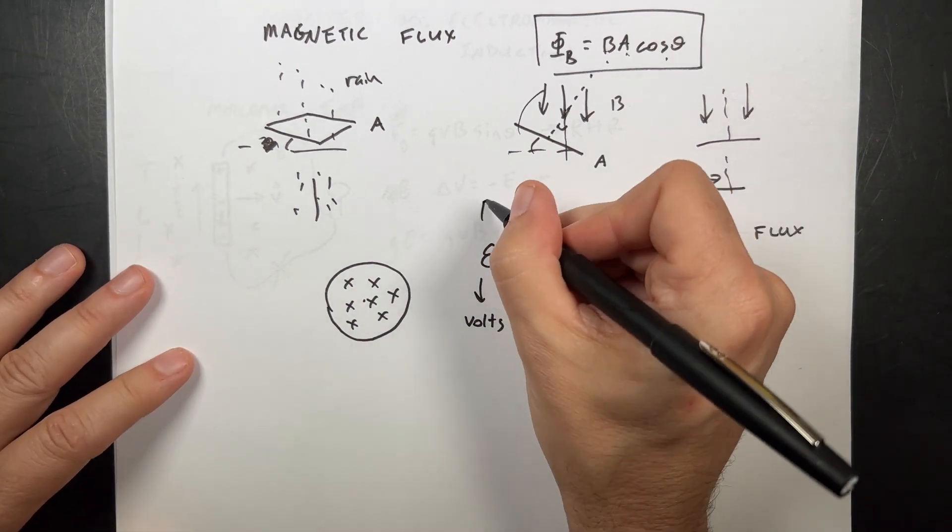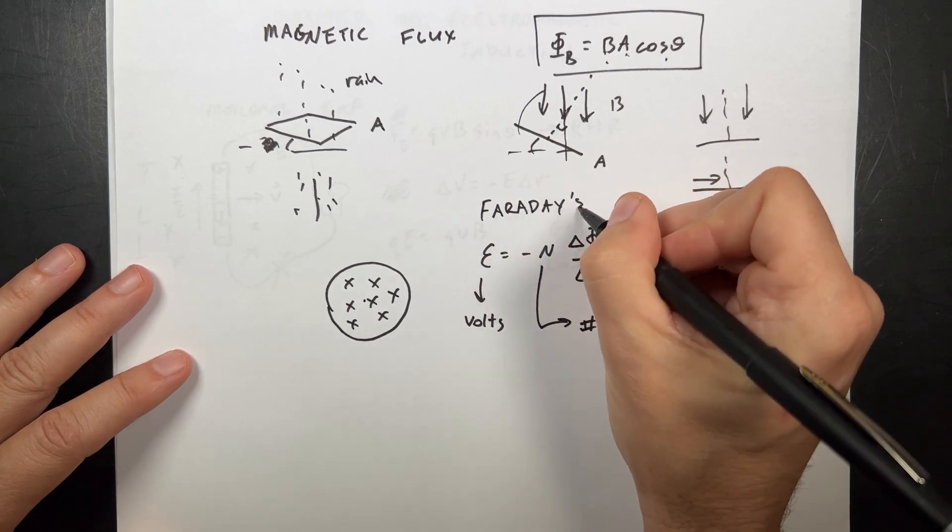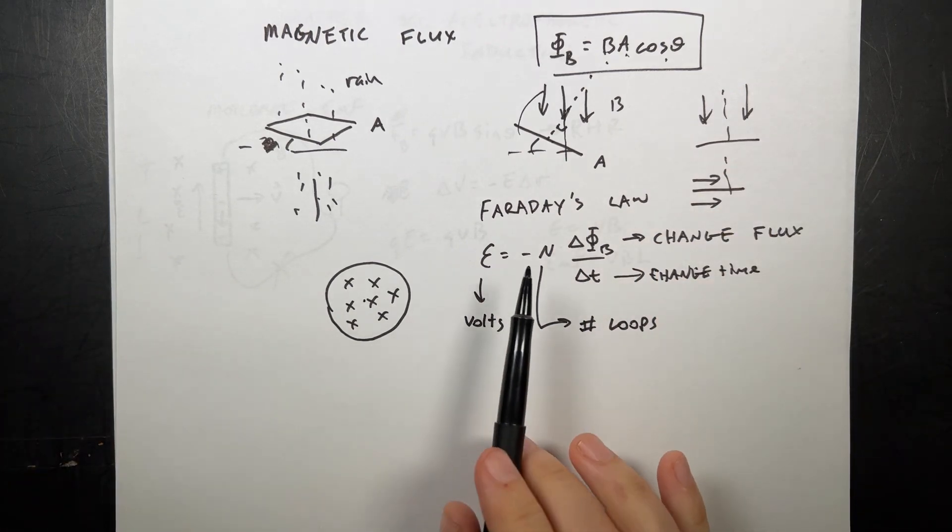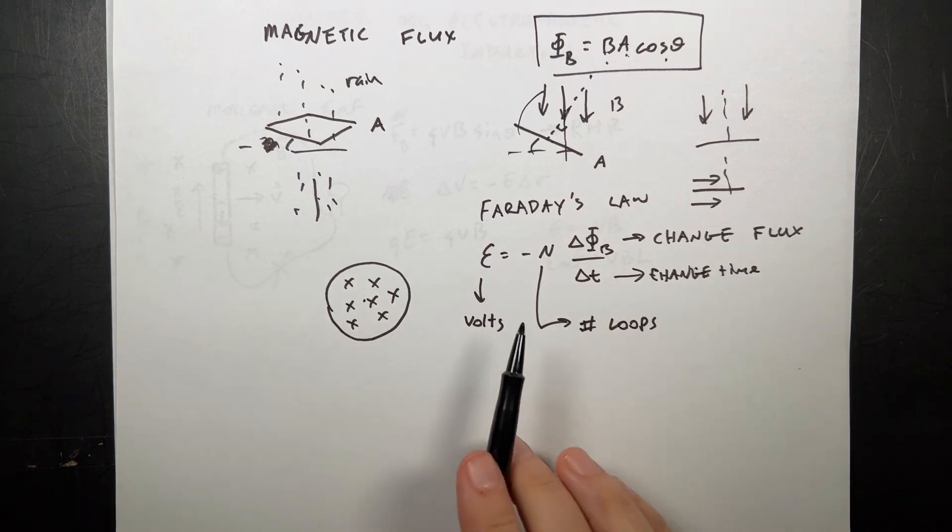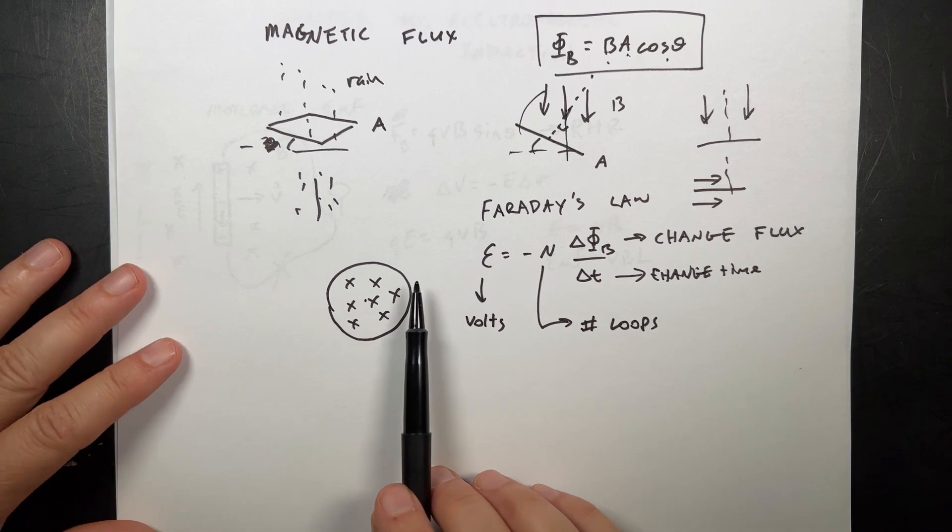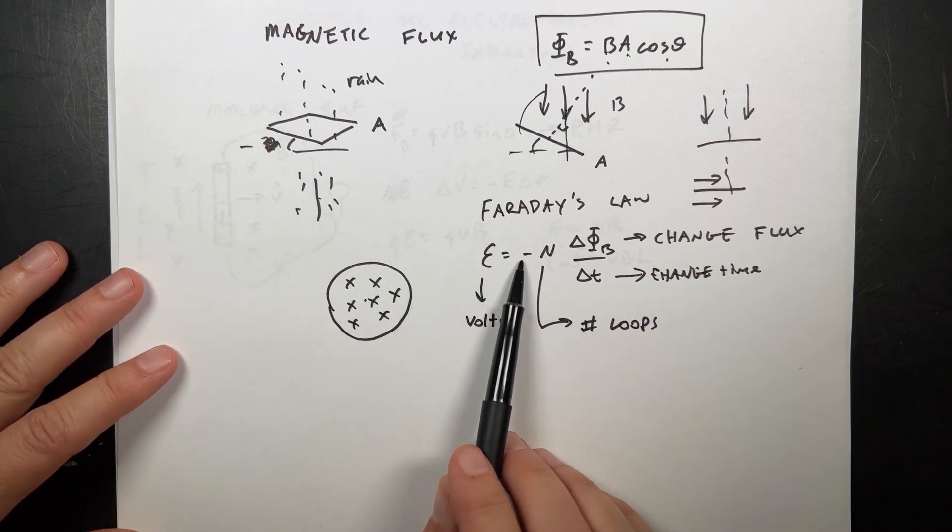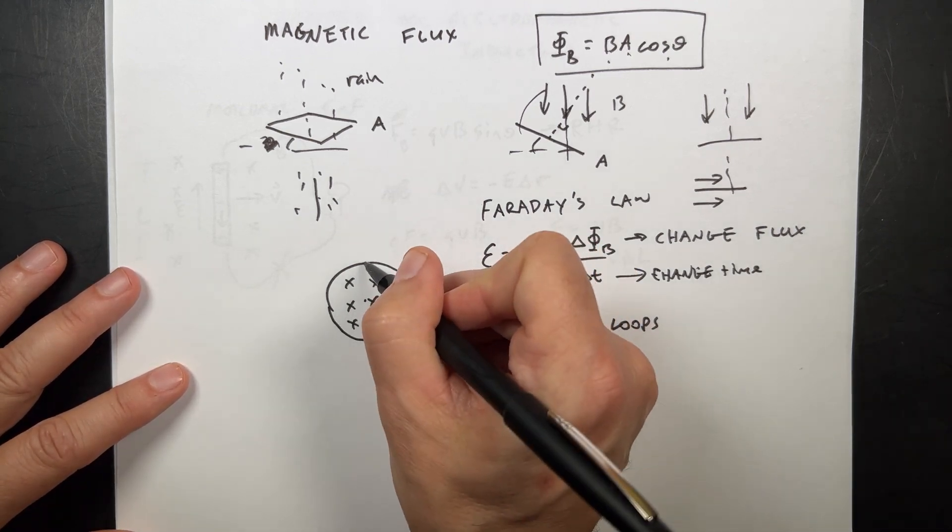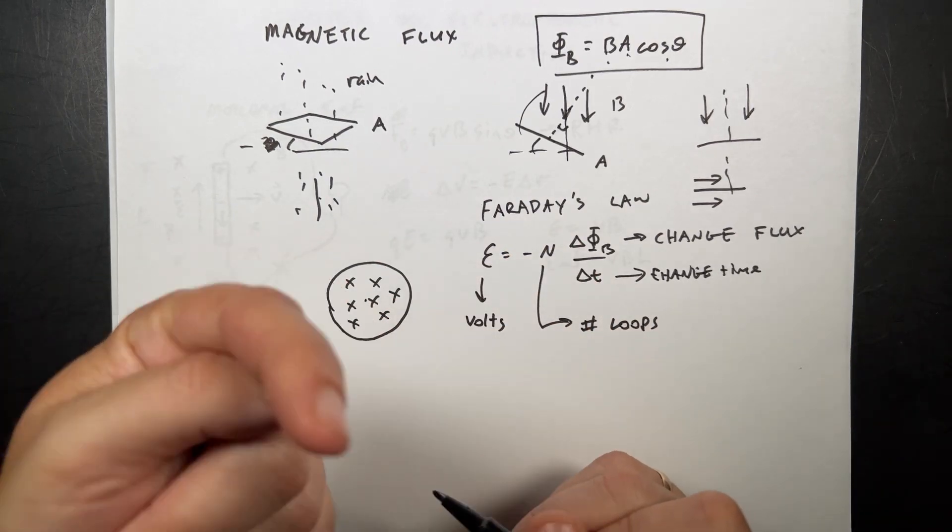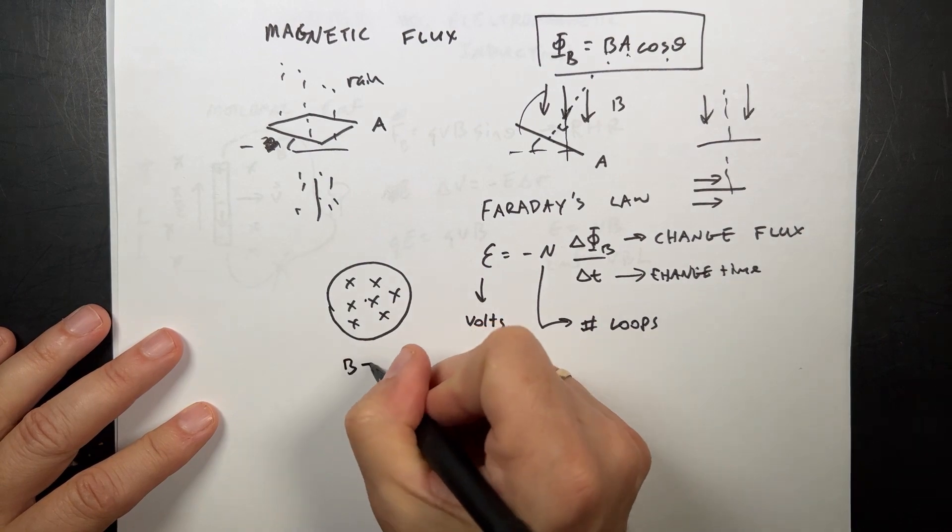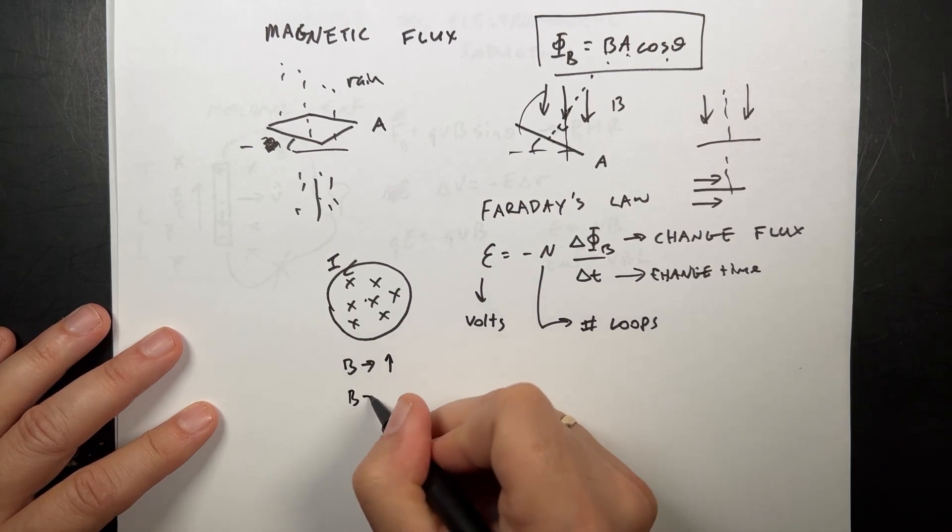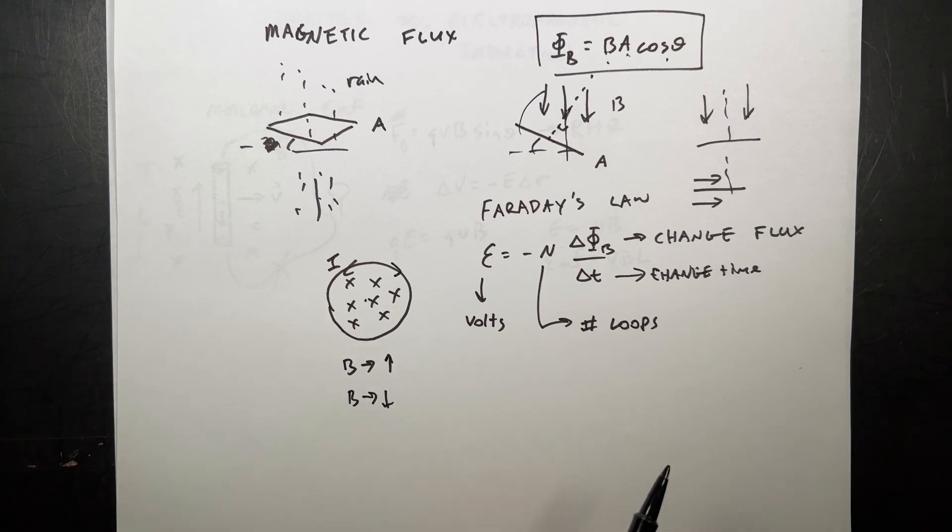We call this Faraday's Law. And the negative sign is not really working in this equation. But I'm going to tell you what it means anyway. The negative sign says that the EMF around this loop would create a current that would oppose the change. So if I increase this magnetic flux, then this would want to make a magnetic field that opposes that going this way. So if I use my right-hand rule, if B is increasing, then I would be this way. If B is decreasing, then I would be that way. Because it wants to oppose the change. It wants to keep things the way they are.